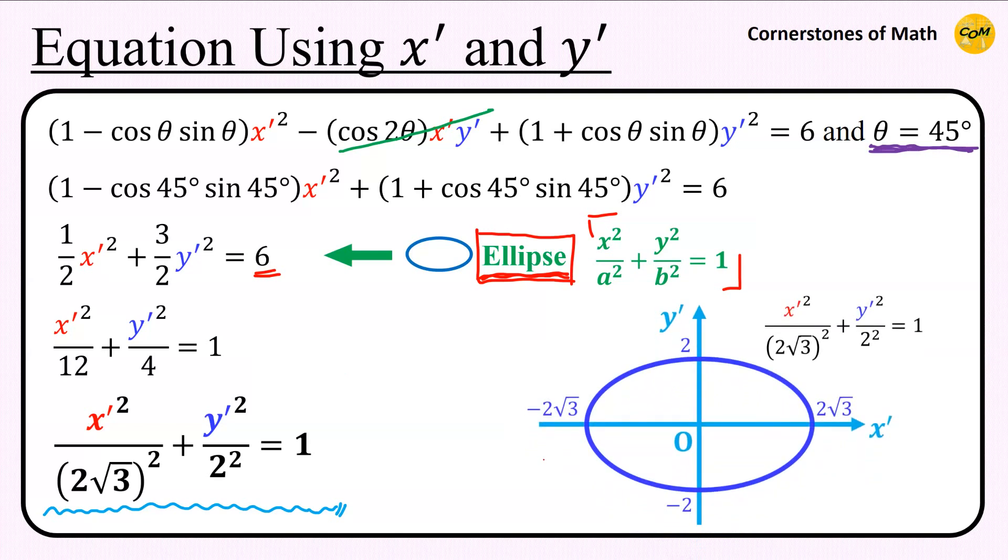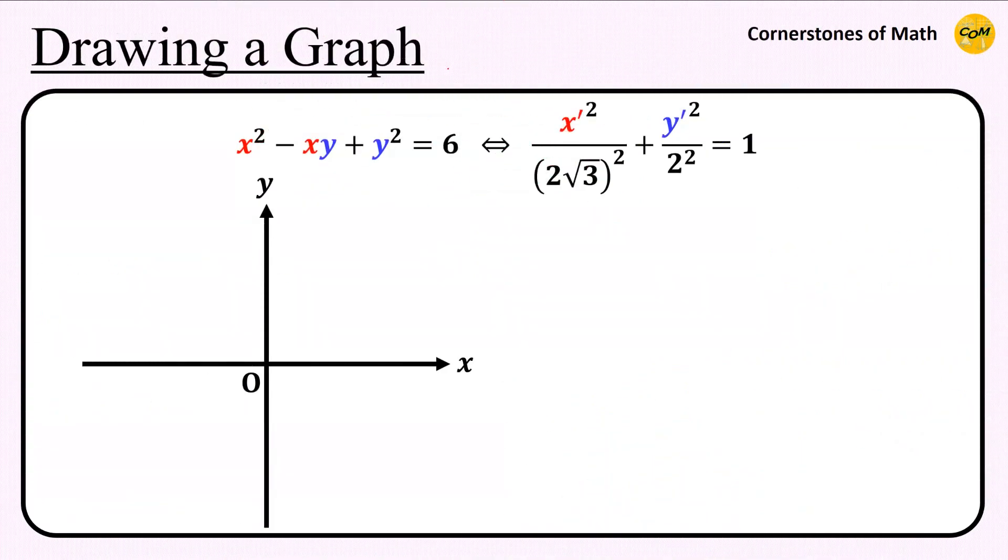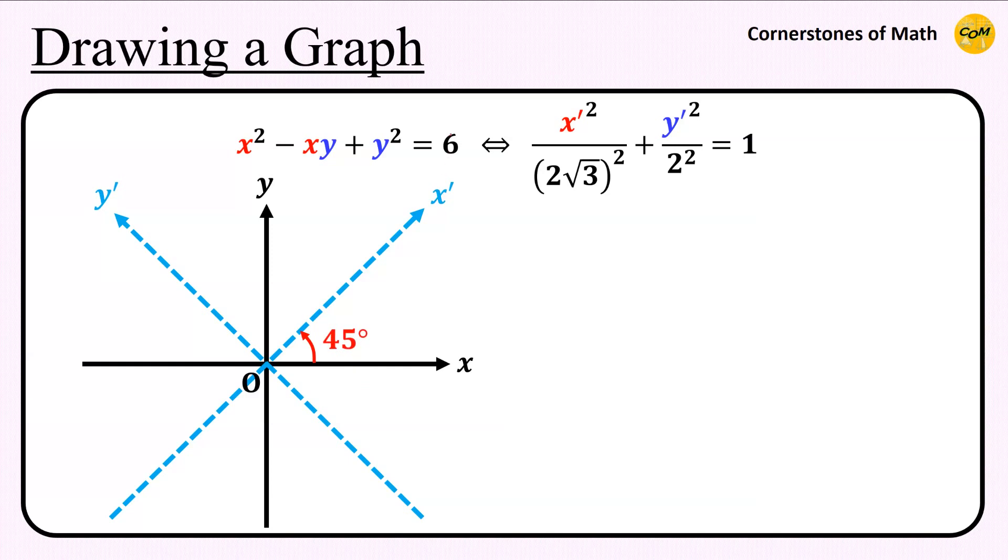So x prime squared over 2 square root of 3 squared plus y prime squared over 2 squared equals 1. Therefore, on x prime y prime plane, this is an ellipse with semi-major axis 2 square root of 3 and semi-minor axis 2. So we can finally draw the graph like this. First, we construct new axes by rotating the existing ones by 45 degrees.